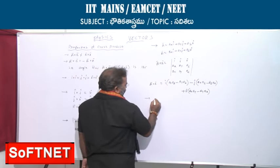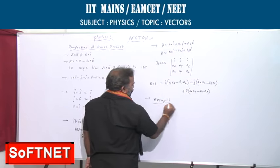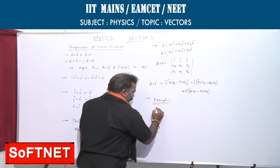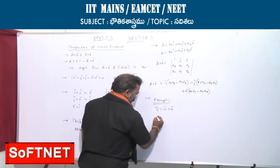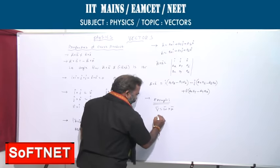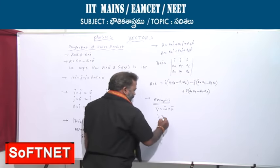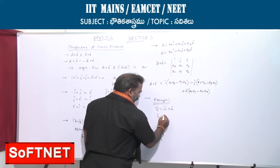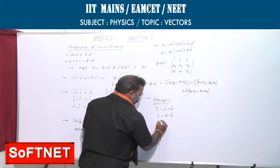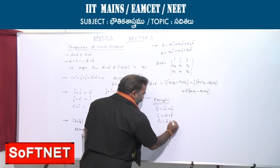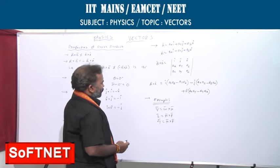Examples for cross product: V bar equals omega bar cross R bar. Angular momentum L bar equals R bar cross P bar. Torque bar equals R bar cross F bar. These are some of the examples of cross product.